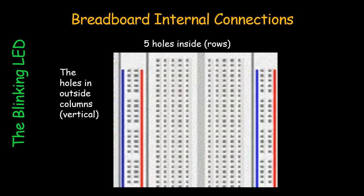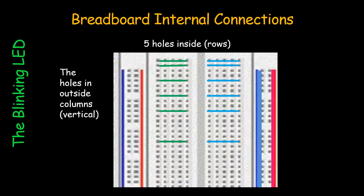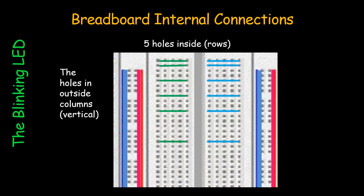You may also use a breadboard. Take note of the connections. In the breadboard, the 5 holes in inside rows are connected, and all holes in outside columns are connected vertically. Due to separation in the middle, the rows on the right are not connected to the rows on the left.